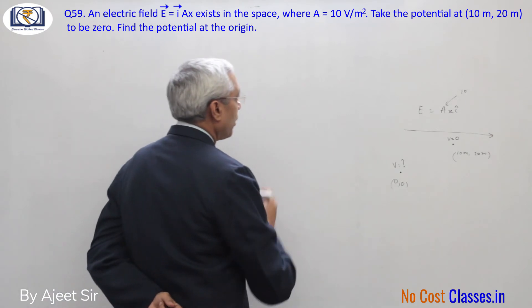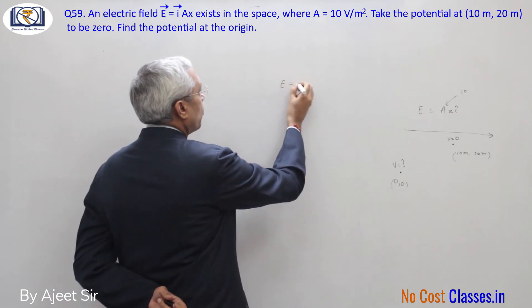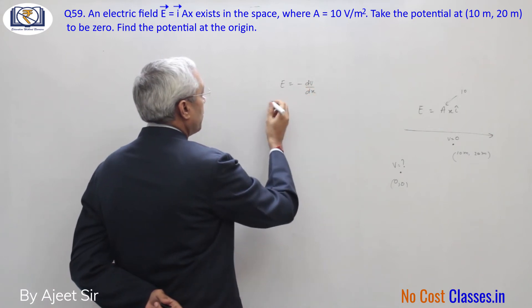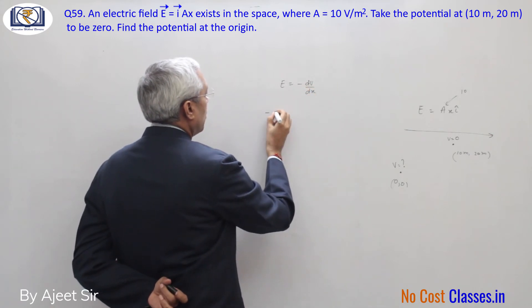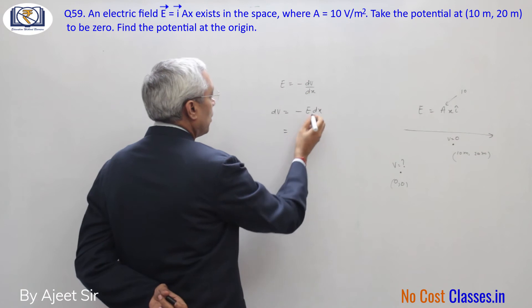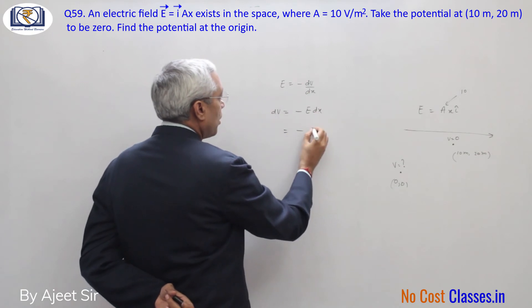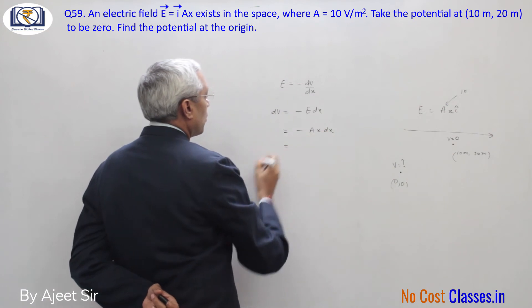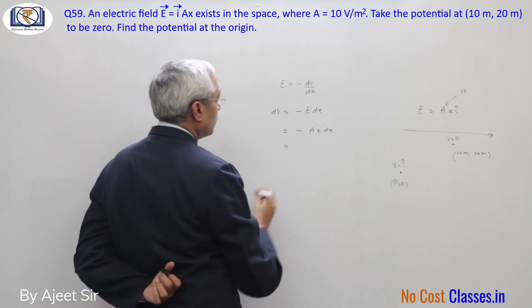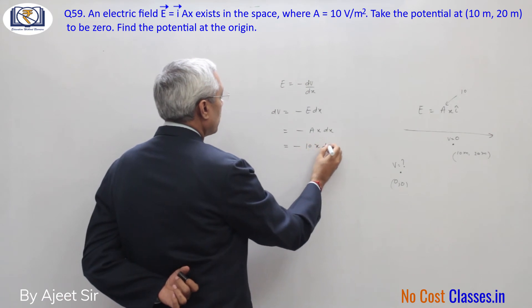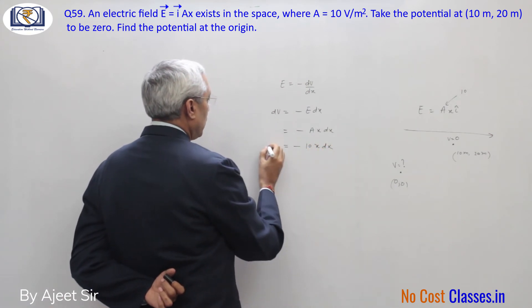So we will use E equals minus dV by dr, and here minus dV equals minus E dx. Then we will substitute the value of x and integrate to get dV.